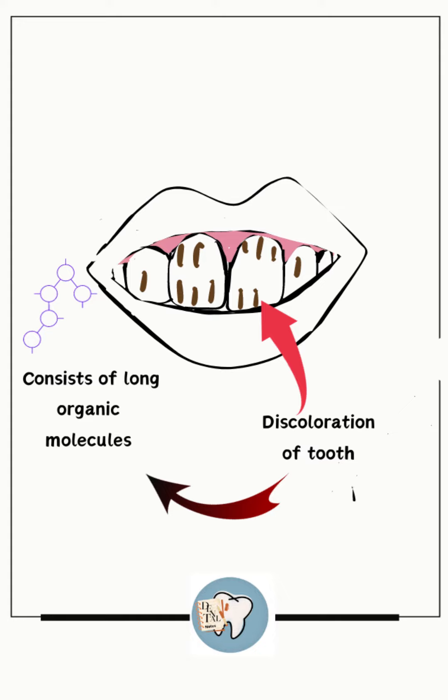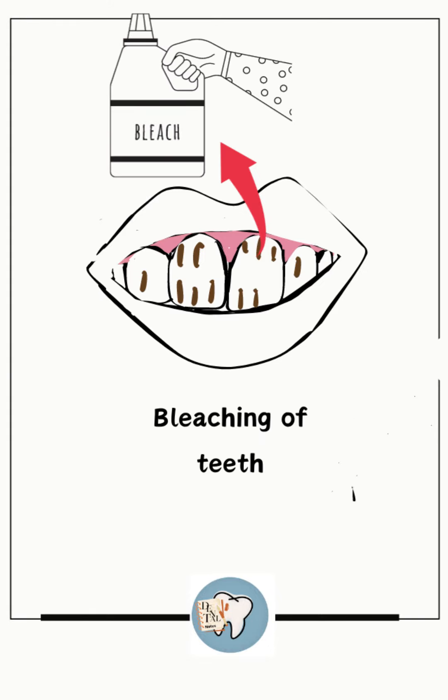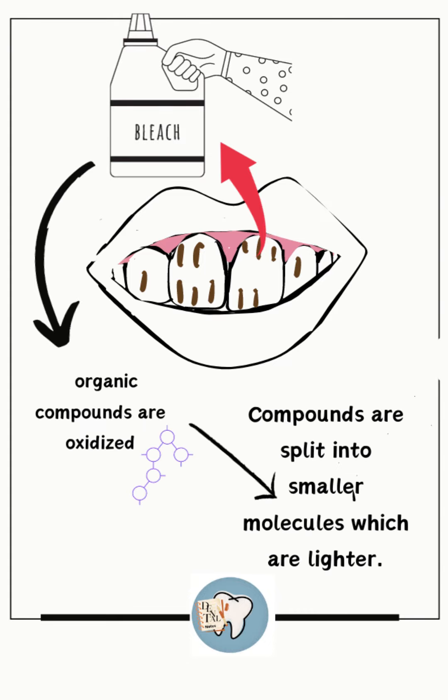This discoloration is very hard to remove with normal teeth brushing and scaling of the teeth. Hence, the dentist decides to go with the bleaching of the teeth. So how does bleaching work?